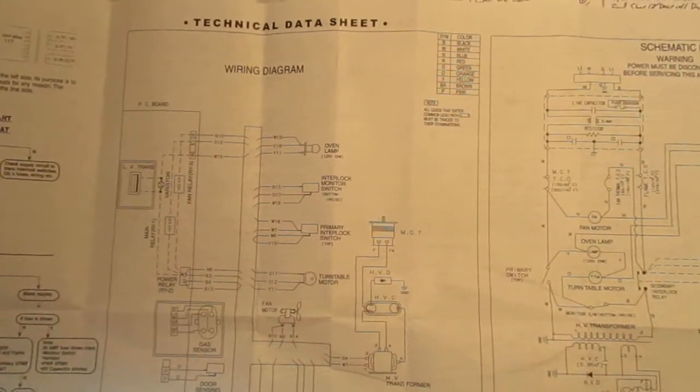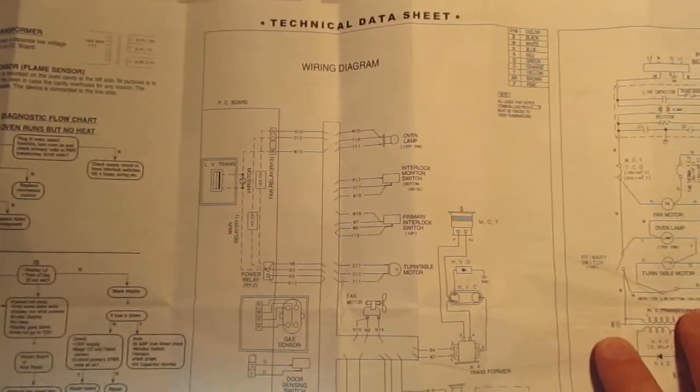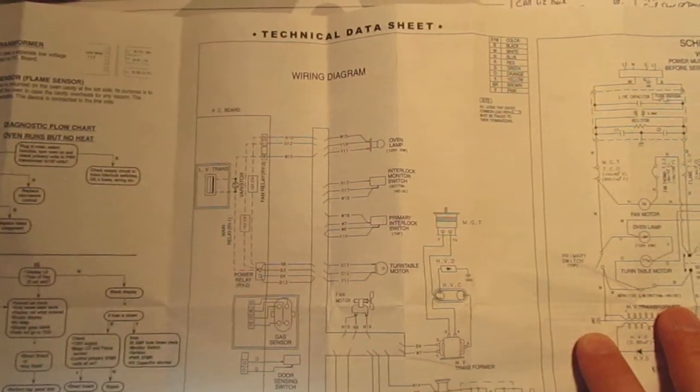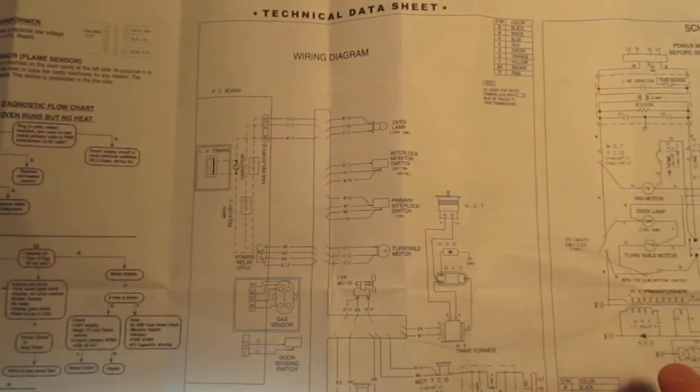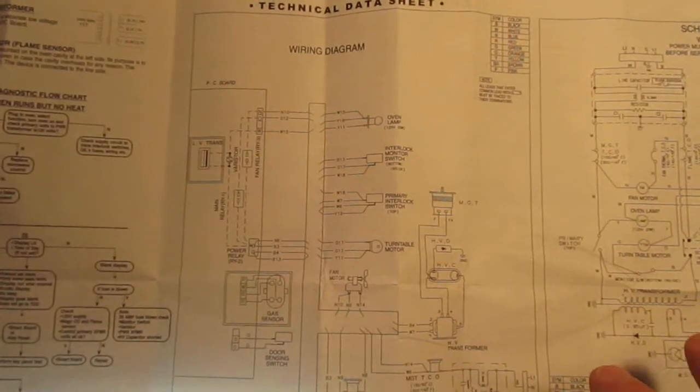Now in your microwave oven, hopefully somewhere you will find a technical data sheet. Mine was actually in an envelope on the inside of the oven. Anyway, long story short, this is the technical data sheet.